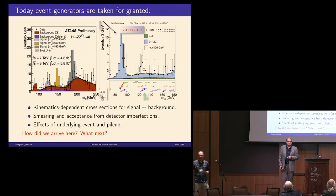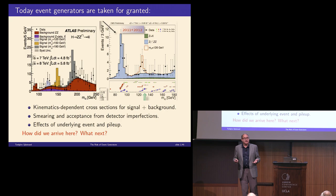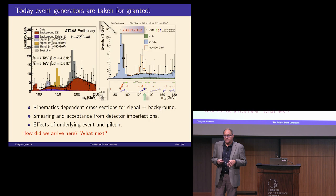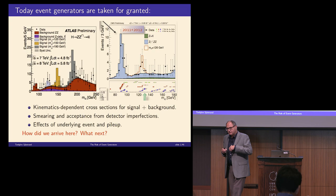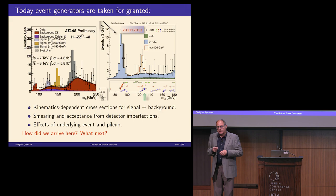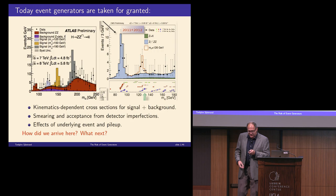Today event generators are generally taken for granted. There's hardly any LHC analysis that's been done without relying on generators to one extent or another. If you have a generator and combine it with a model for your detector, then you can understand your signal and background, including smearing, acceptance corrections, and aspects like underlying events and pile-up that you normally don't think of in perturbative calculations.